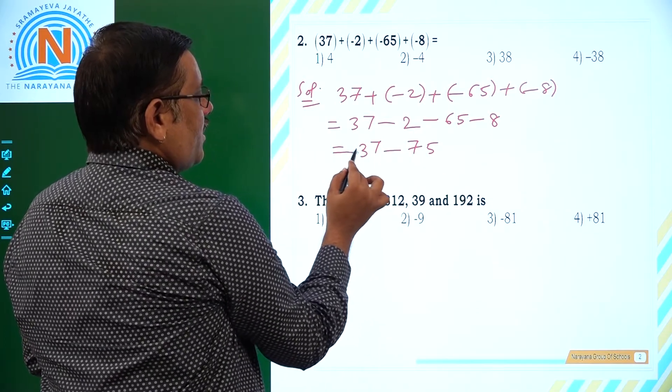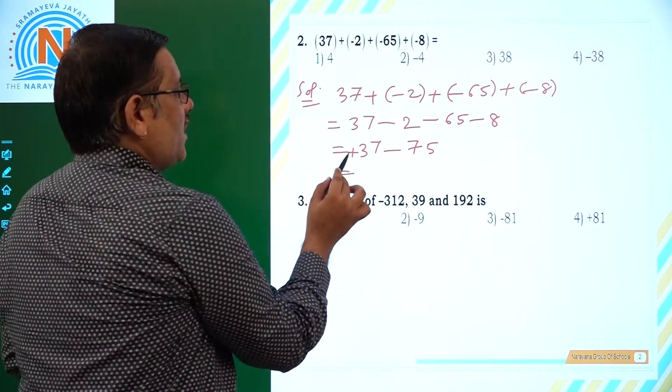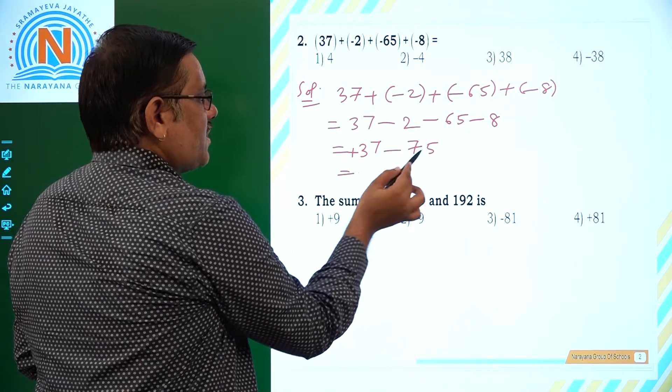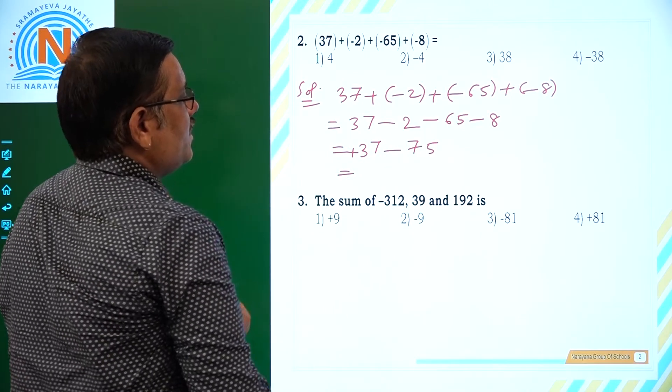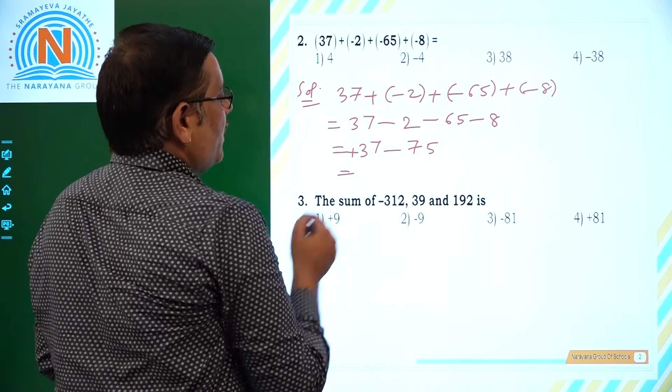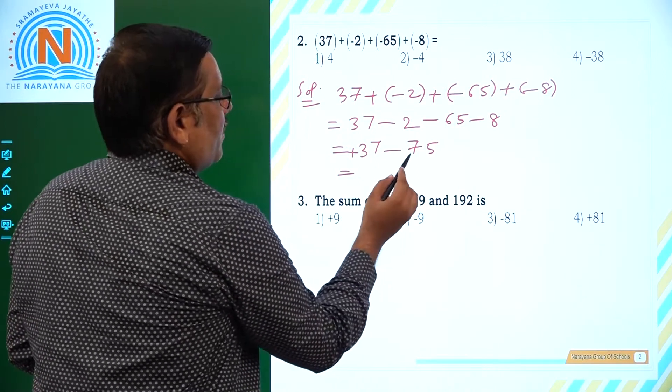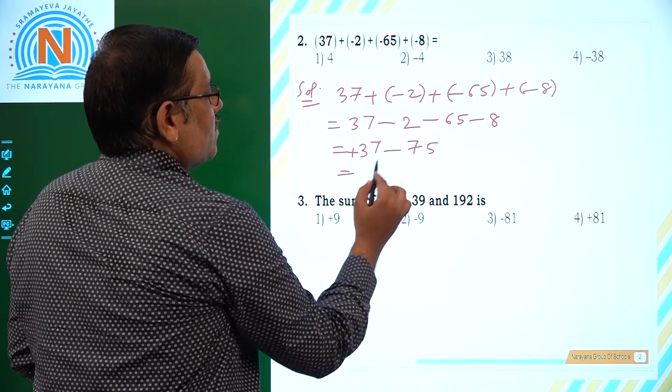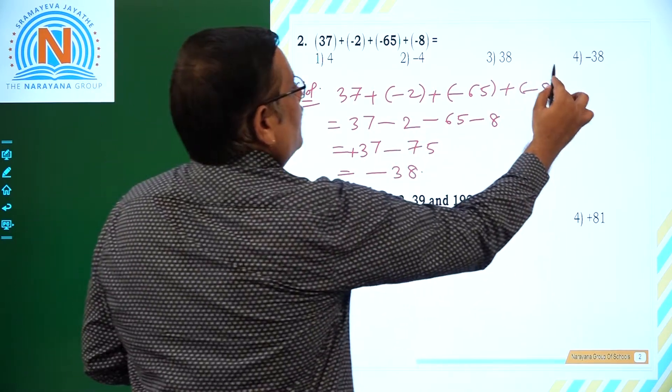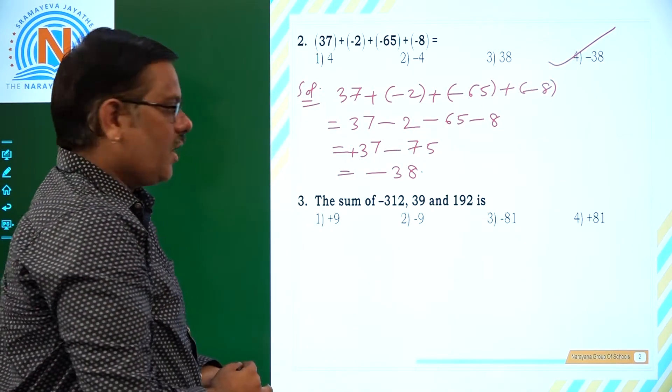37, there is no sign here, that means it is plus. So there are two different signs. Subtract, 75, 37. The difference is how much? 75, 37 means you get the answer as 38, but larger number has negative sign. So, -38. -38 is the answer. That is nothing but fourth option.